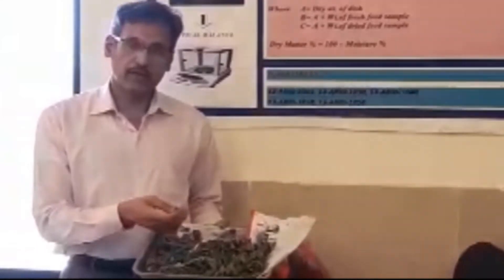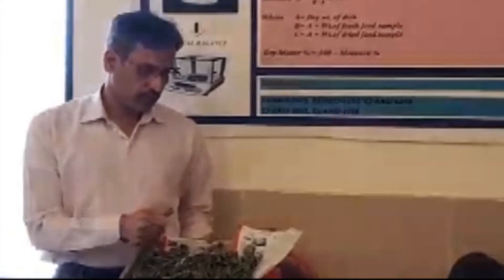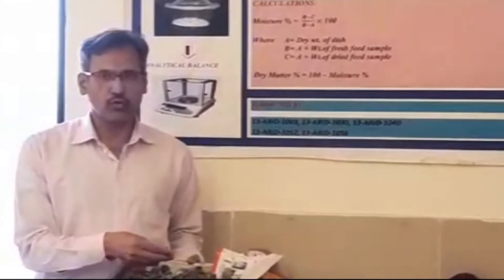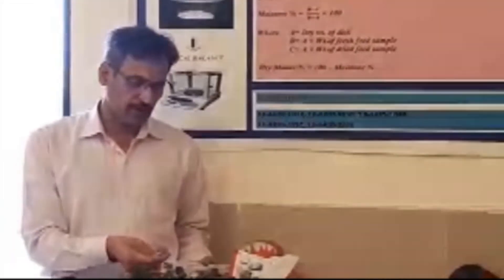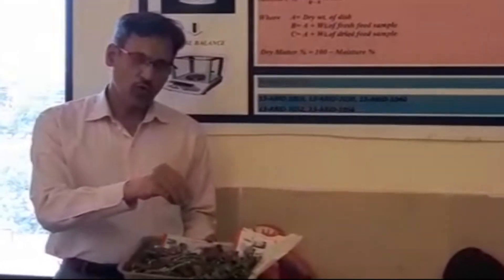Here you can see we have a sample that has been dried in an oven, and this green material has also been dried in an oven. We calculate the intake of this type of material, and we can convert it to a fresh matter basis if we know the dry matter content of the feedstuff. After drying, the material can be easily crushed.